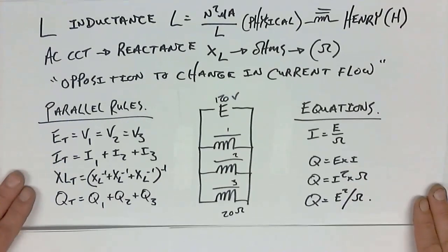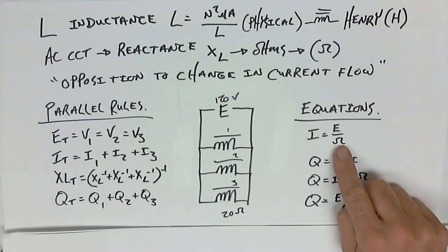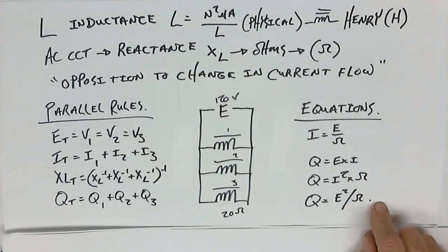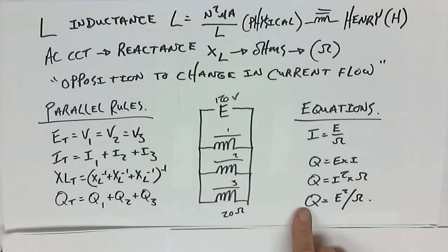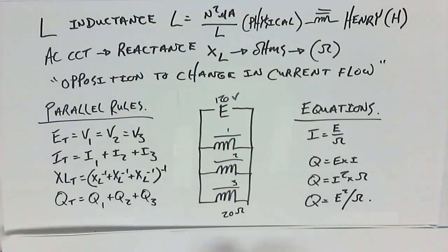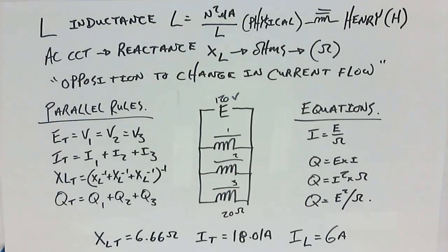How are we going to calculate these values? The same way as before — Ohm's law still exists. We still have three formulas to calculate values of VARs. With a 120-volt source, three inductors each at 20 ohms, our values are XL total of 6.66 ohms, total current of just over 18 amps, and current through each individual inductor of 6 amps.